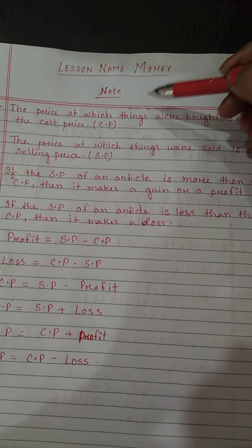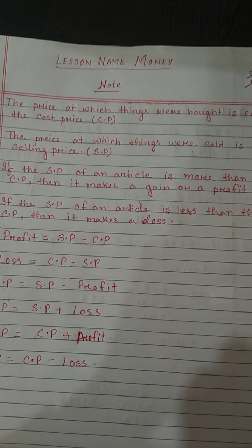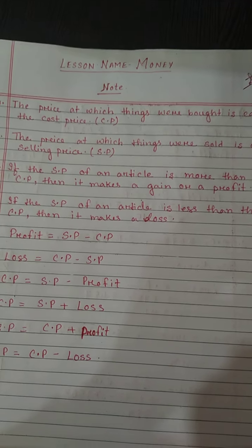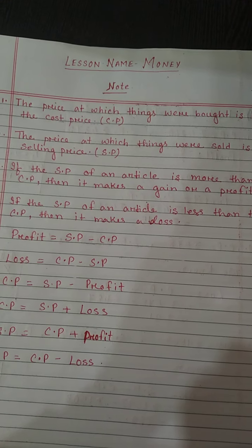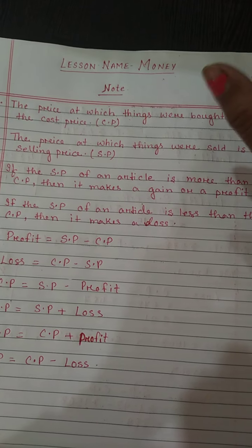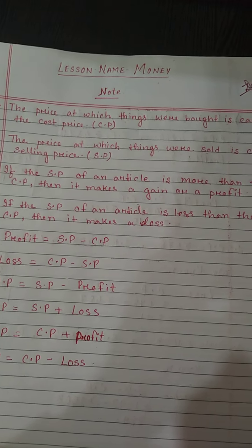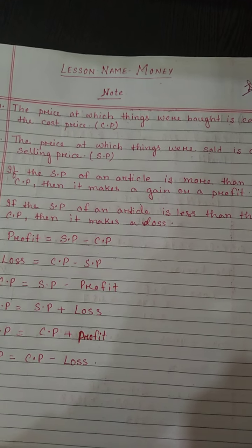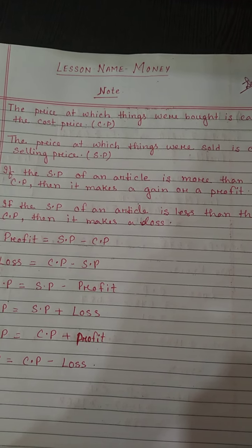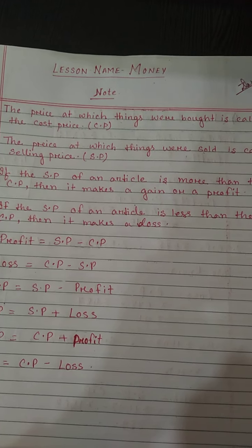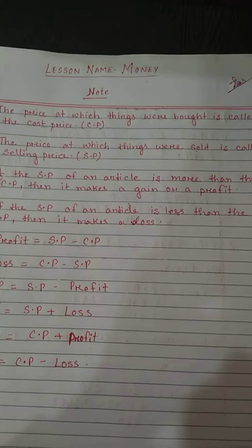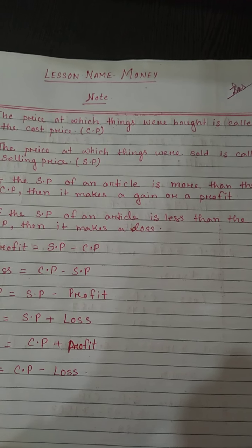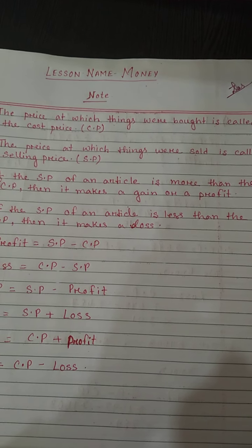Think of yourself as a shopkeeper. For your shop, you have to buy some items. Whatever things are required for your shop, you have to buy them — that is known as cost price. Whatever items you buy, those are known as cost price.